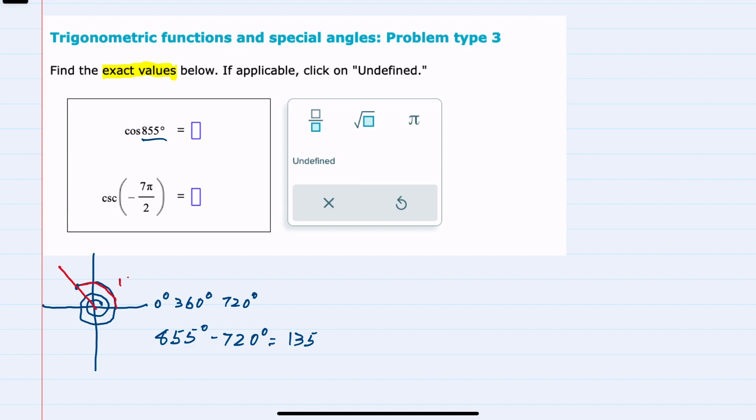So we can see here that the cosine of 855 degrees is coterminal, so it will have the same cosine value as 135 degrees. And from here I can get the coordinates of the terminal point since it's exactly in the middle of this second quadrant.